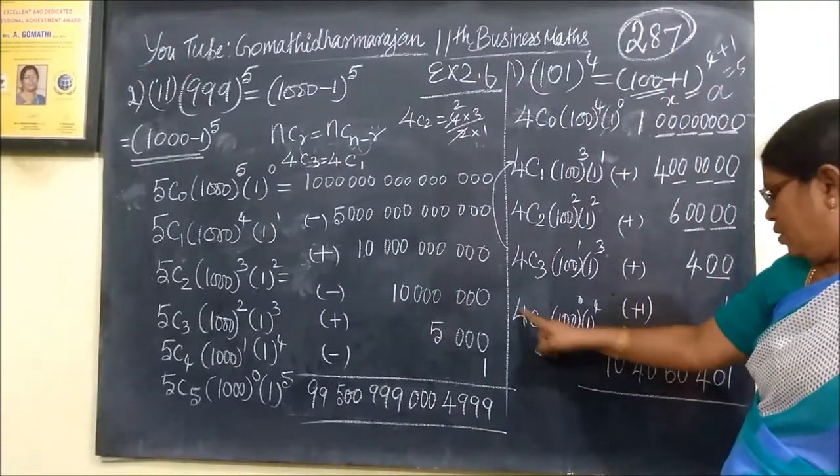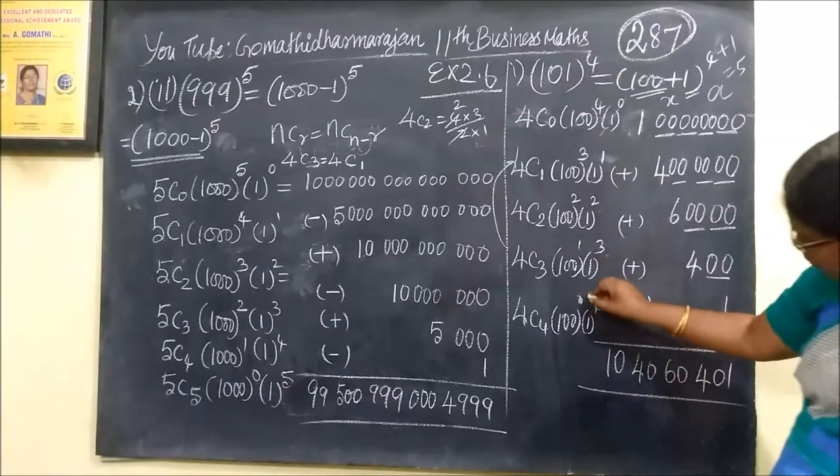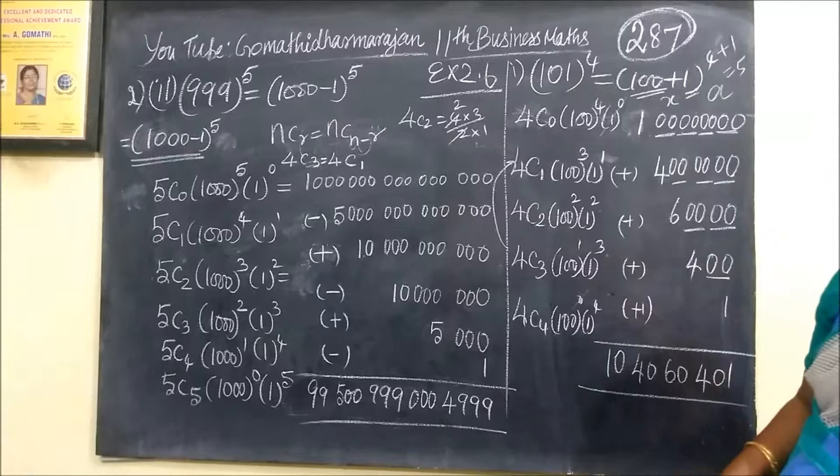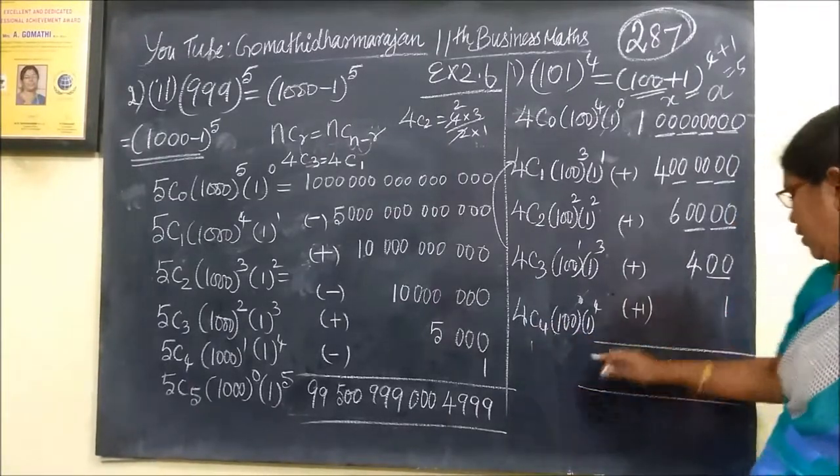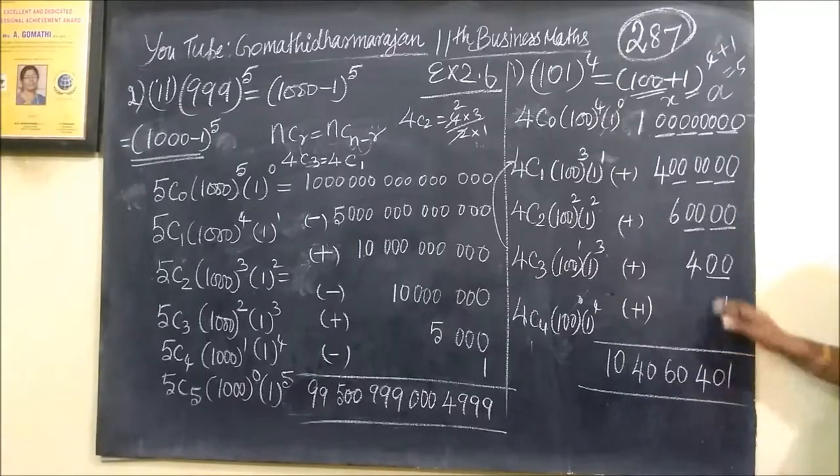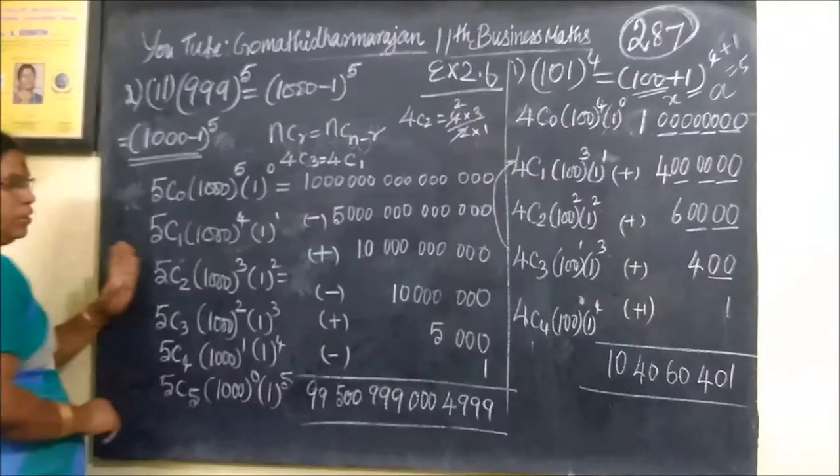4C4 is 1. So 4C4, 100 power 0, this is 1. So 1 times 1 power 4 is 1. So this is the same way, same explanation.